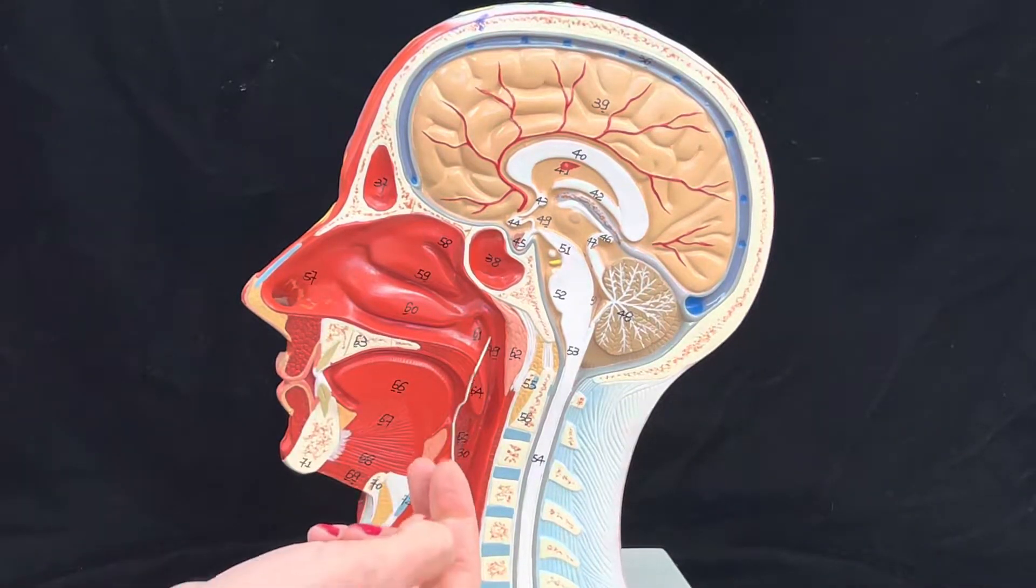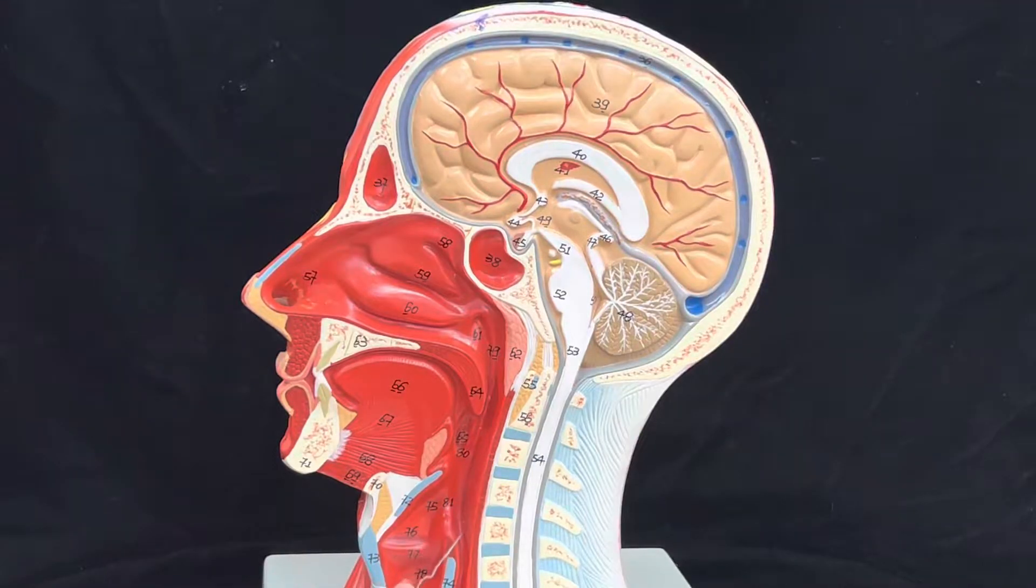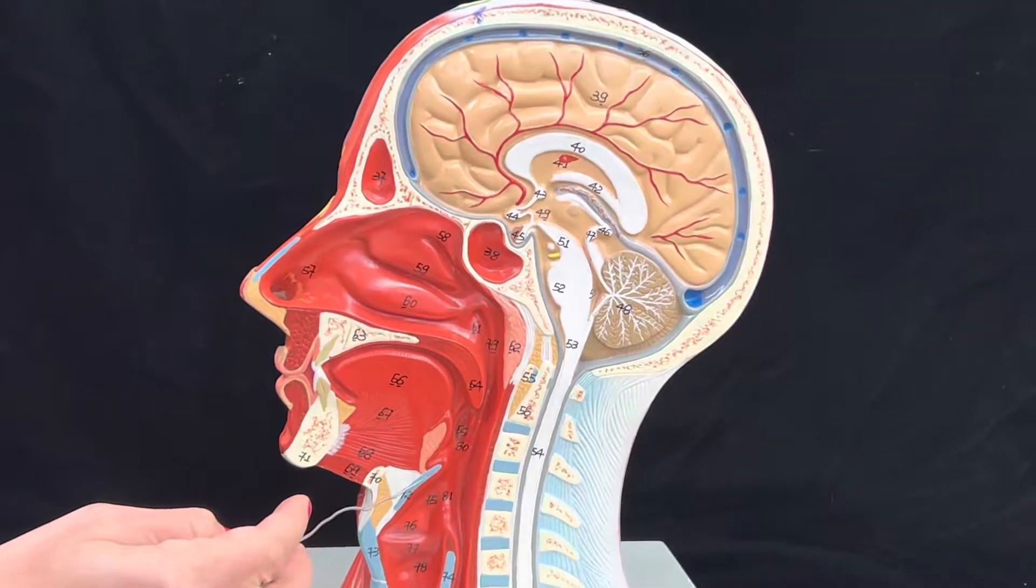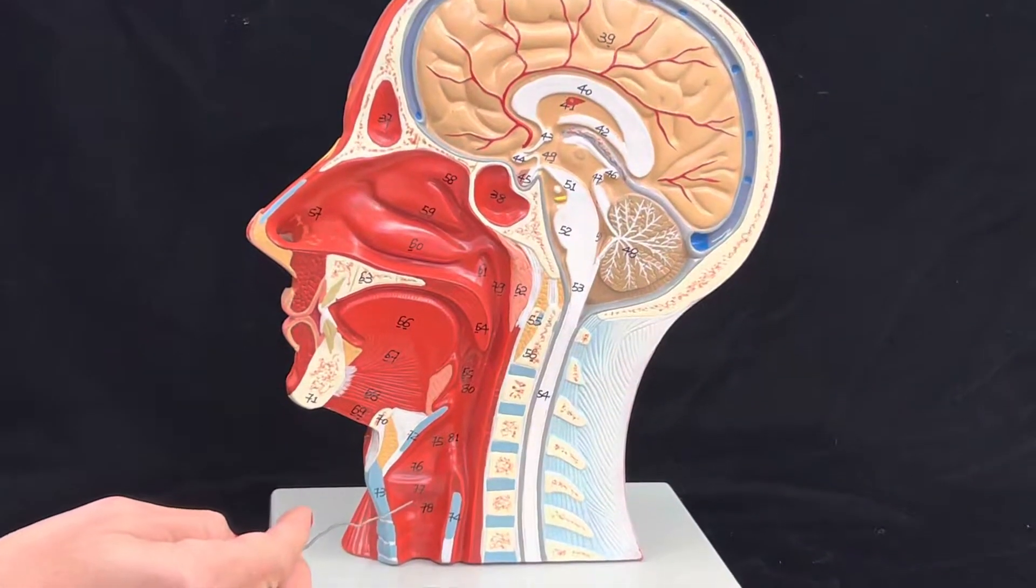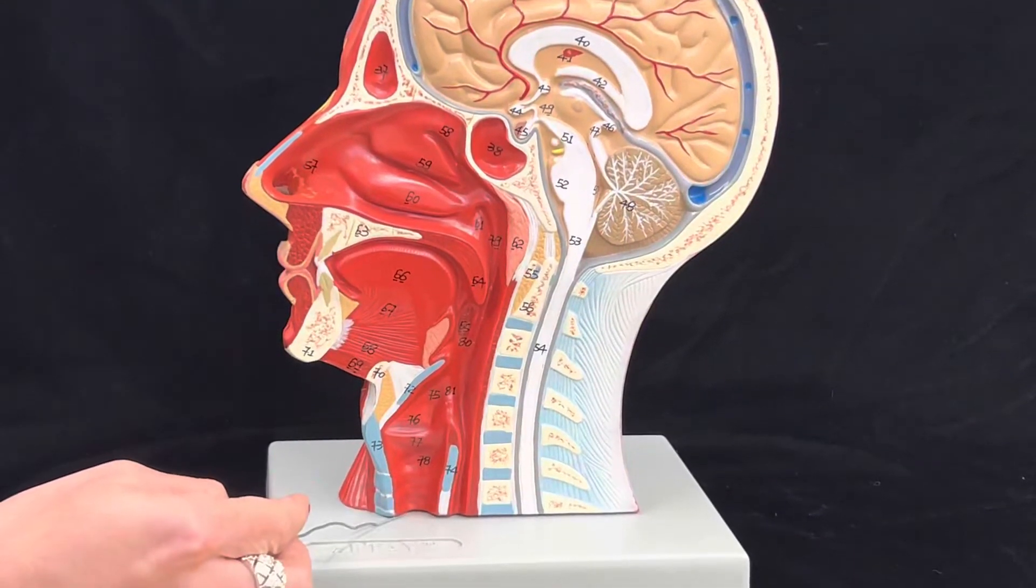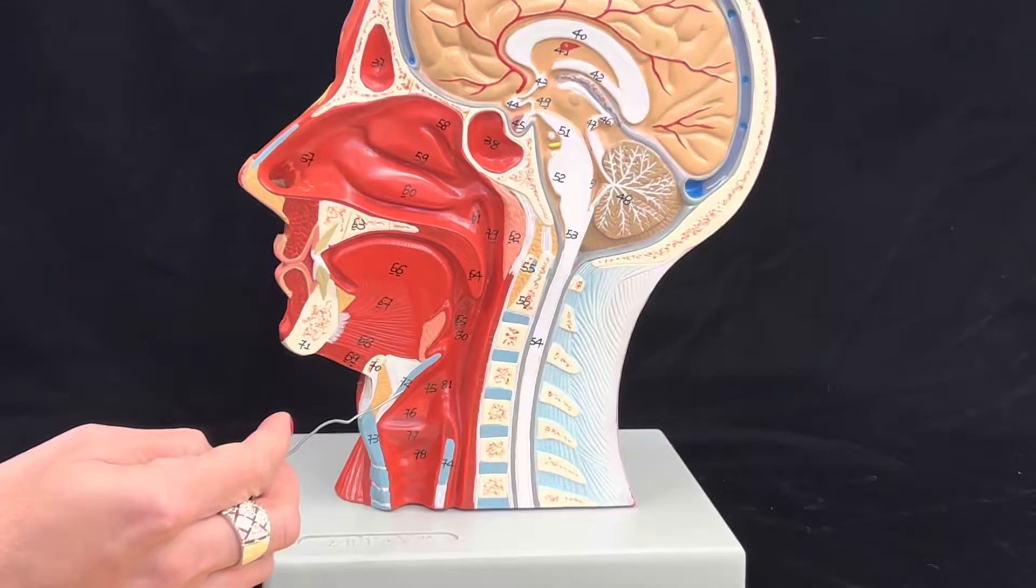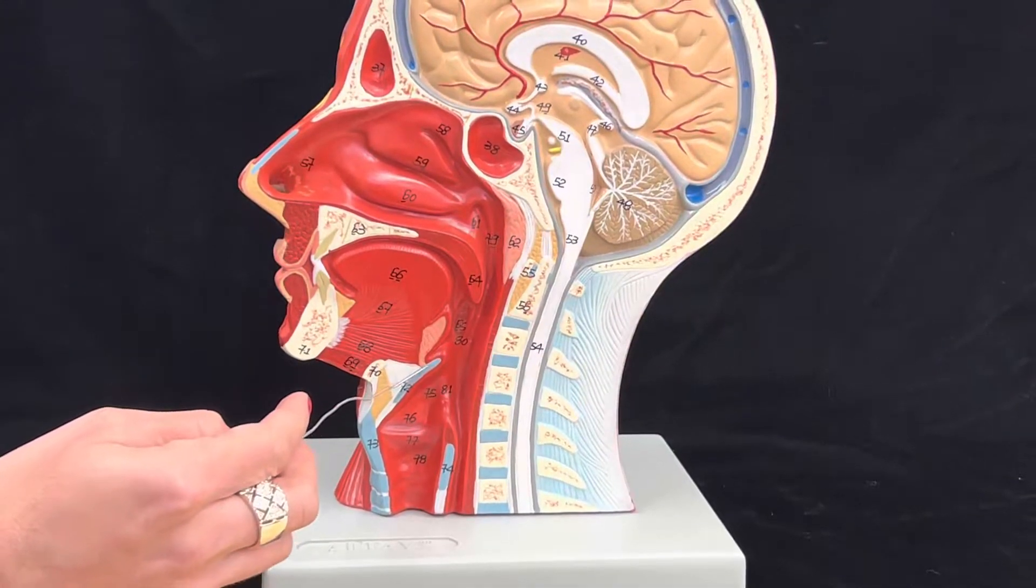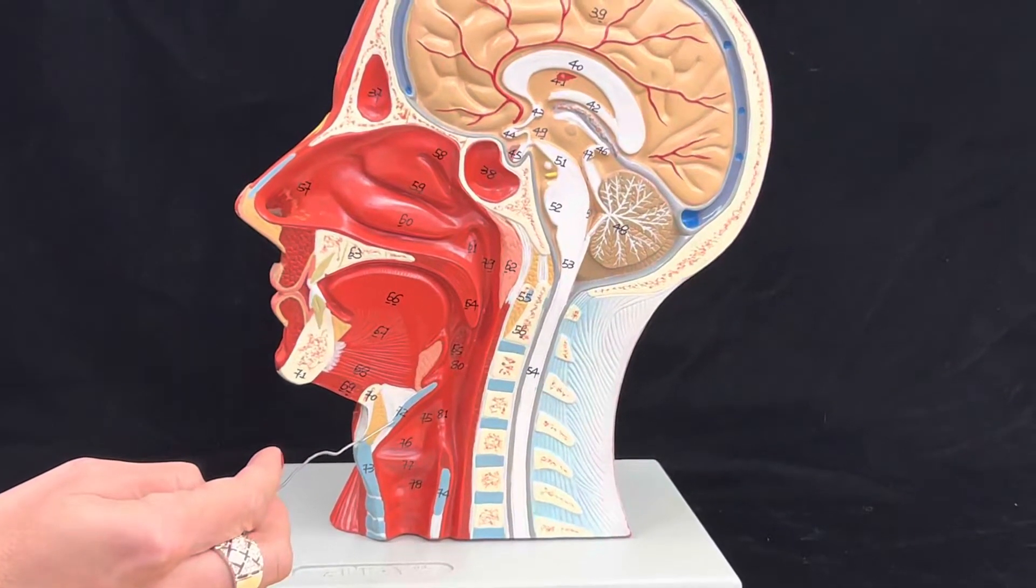If we follow it down right here, we can see that this is the larynx, and then this is the trachea. This is one of the cartilages of the larynx. This is the epiglottis.